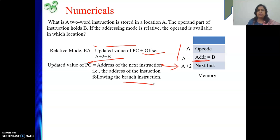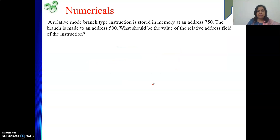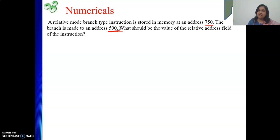Relative mode is basically used for branching. Next, another similar type of question: a relative mode branch instruction is stored in memory at address 750. The branch is made to an address 500 — this is the target, which is my effective address.